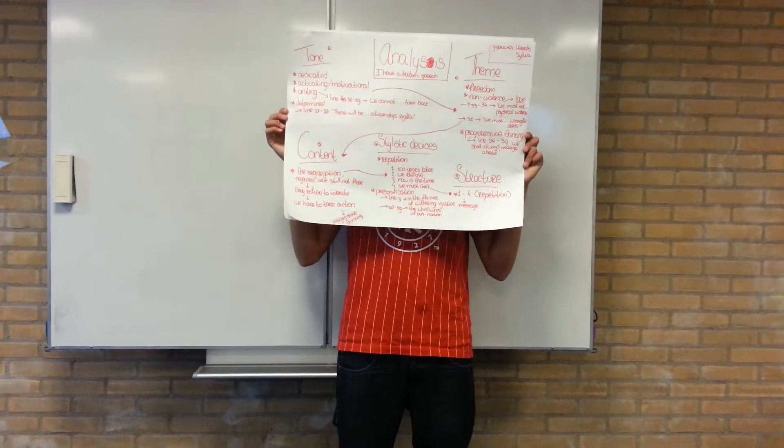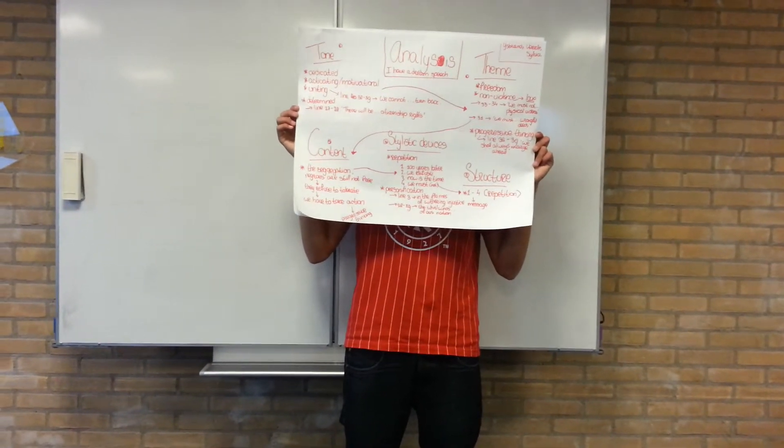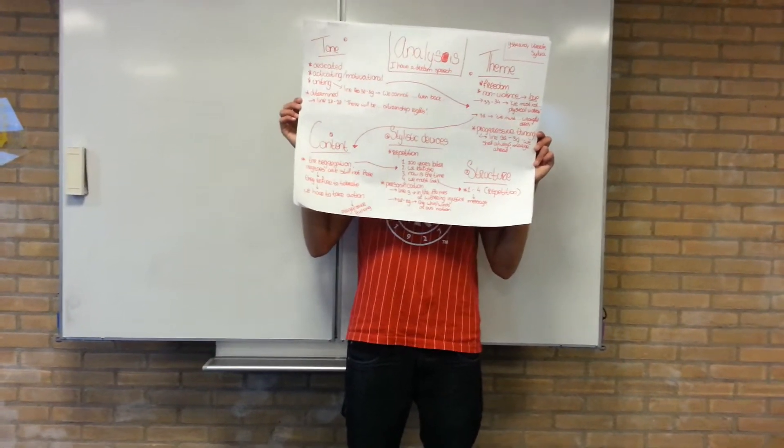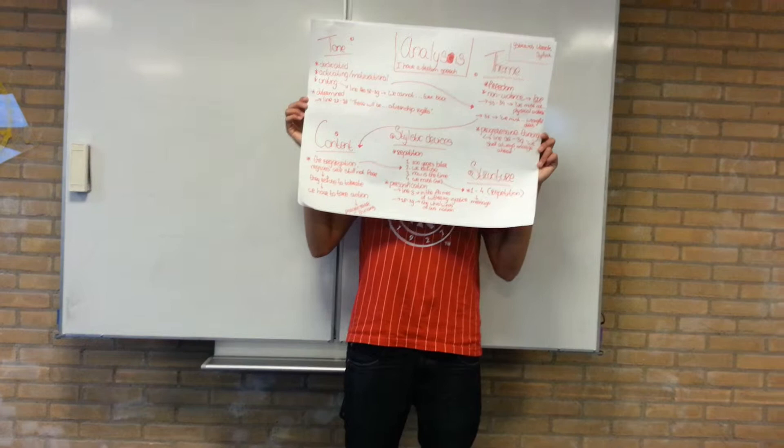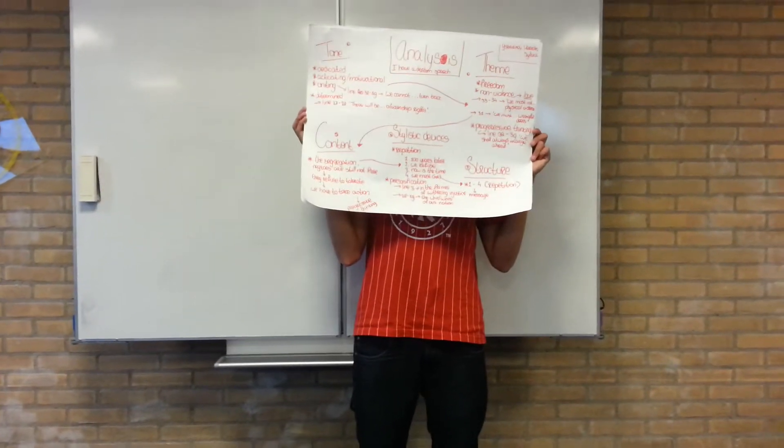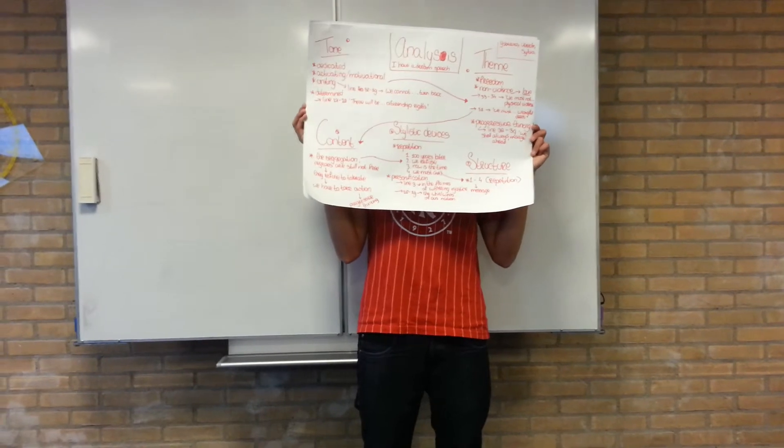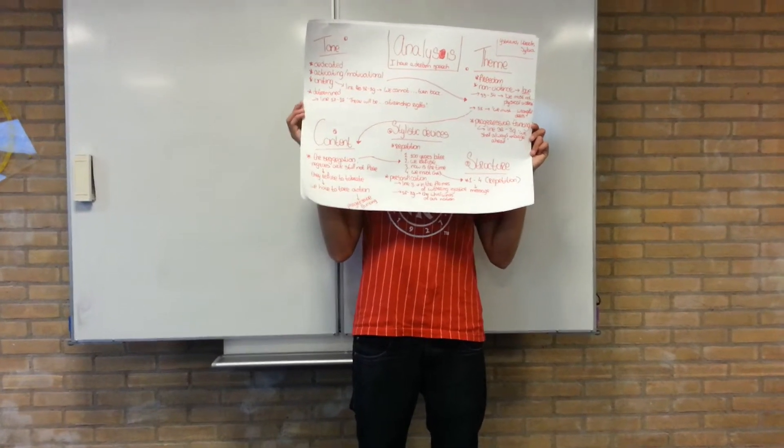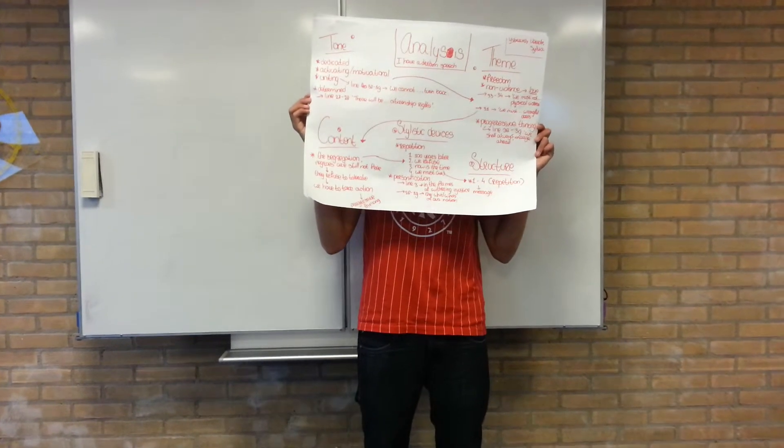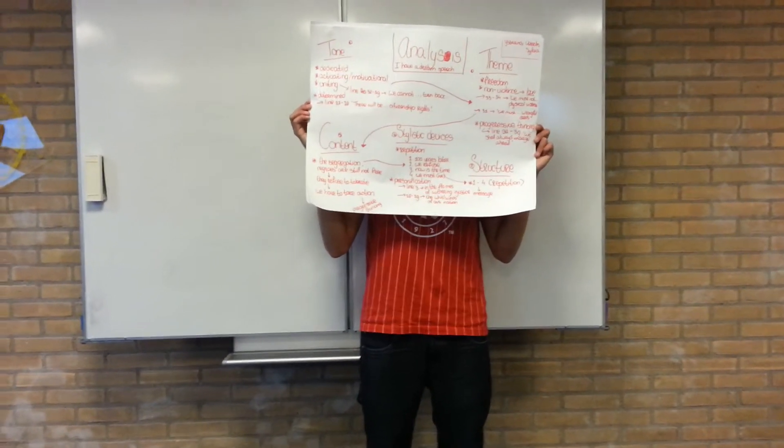He's also talking about progressive thinking. That's on line 38 and 39. And there he also says again: we cannot walk alone. As we walk, we must make a pledge that we should always march ahead, we cannot turn back. He says we march ahead, we make progress, but in a non-violent way we make progress.